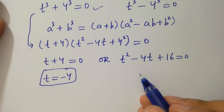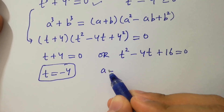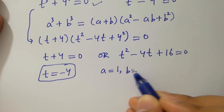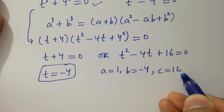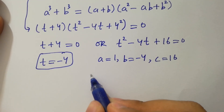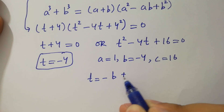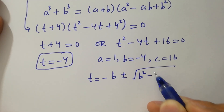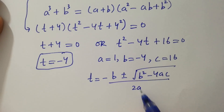The other factor is a quadratic equation. By comparing, we have a equals 1, b equals minus 4, c equals 16. Applying the quadratic formula: t equals minus b plus or minus square root of b squared minus 4ac, over 2a.